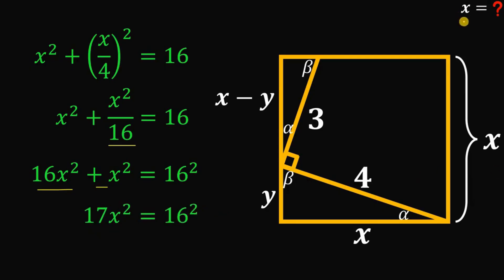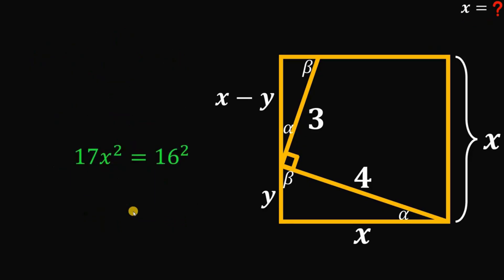Now to solve for x, because we want the value of x or the side of the square, divide both sides by 17. And now get the square root on both sides. And take note,